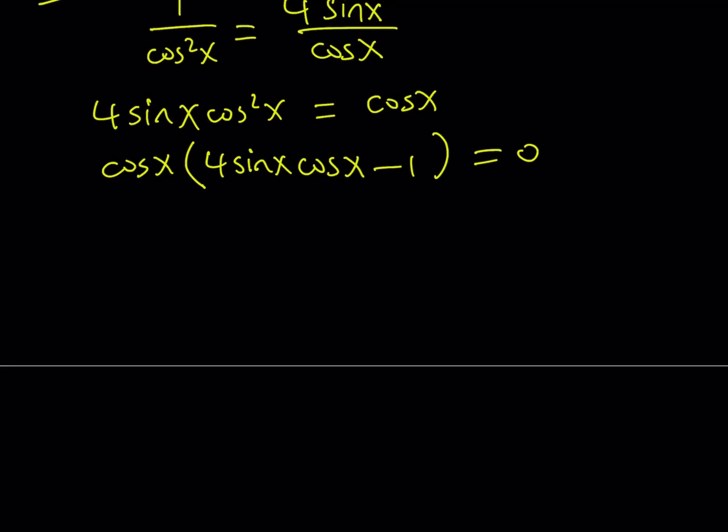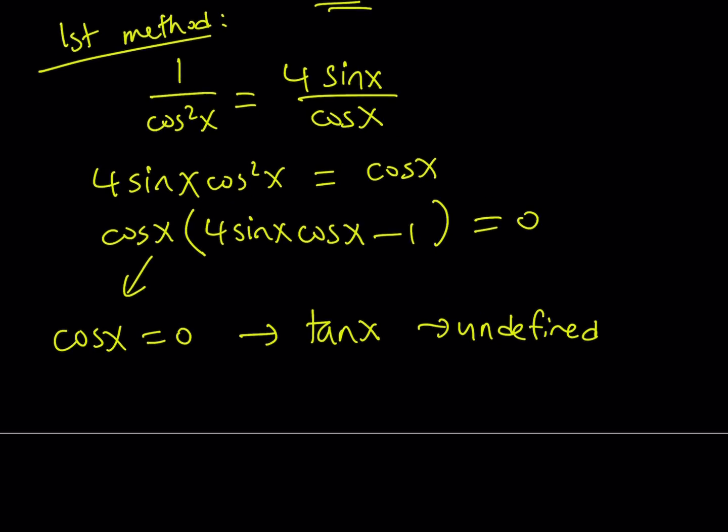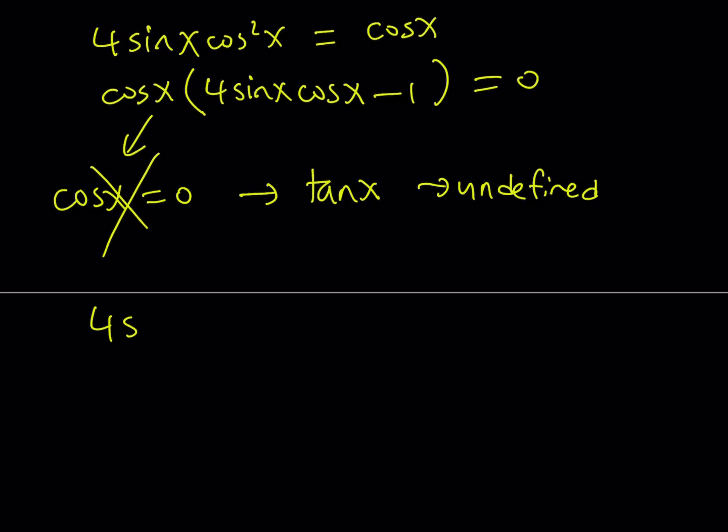Now, if cosine x is equal to 0, obviously that's going to be a solution of this equation, but not the original one because if cosine x is equal to 0, then tangent x will be undefined. And you don't want that because we have a tangent x in the equation, so we want to be very careful not to make it undefined. So cosine x cannot be 0, obviously. We're going to reject that. So we're going to be looking at the other factor, which is 4 sine x cosine x, and we're going to set it equal to 1.